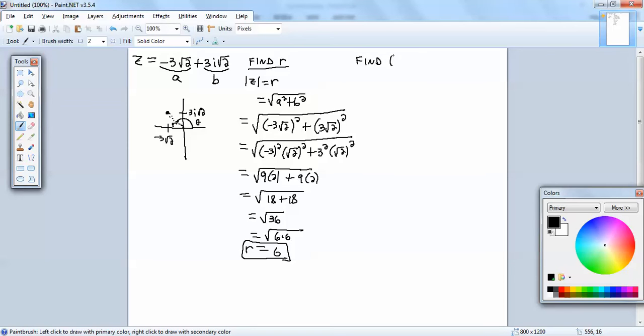We also need to find theta. And first off, we'll consider if it's on a unit circle. So, we've got cosine theta is equal to x over r, and remember, x was a in this problem. So, a over r. And sine is equal to y over r, and y is b in this problem. So, it's b over r.